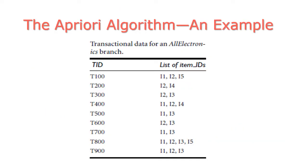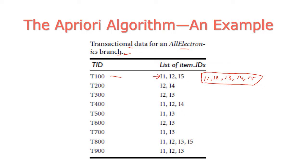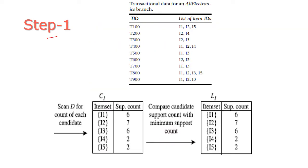Now let us see an example for the Apriori algorithm. Here we have a list of transactional data from an electronics branch. There are nine bills from customers, and under each bill the list of purchased items is listed. The total items are I1, I2, I3, I4, and I5 — five items in total — and all five items purchased by the consumers are listed here. The first step is to scan the dataset D for a count of each candidate.